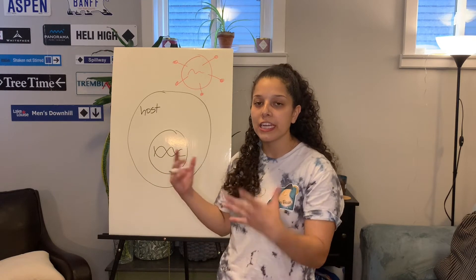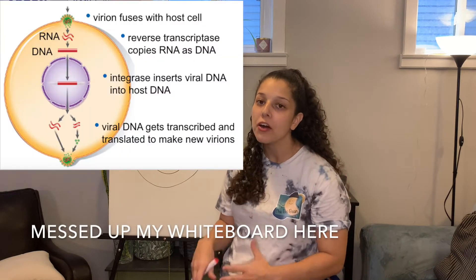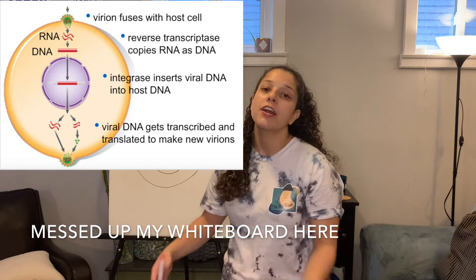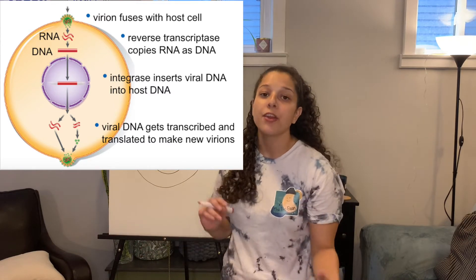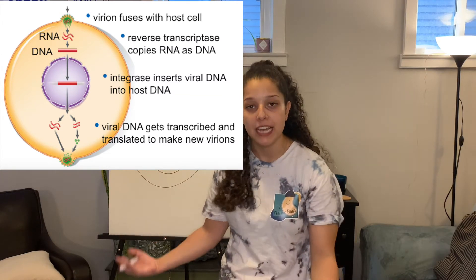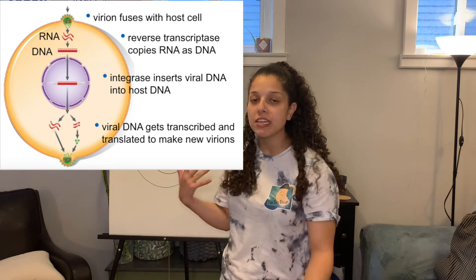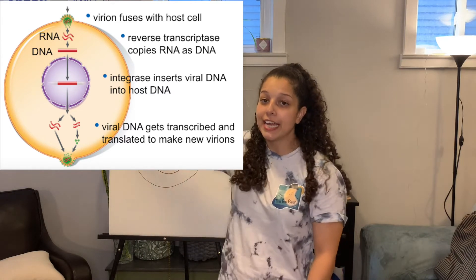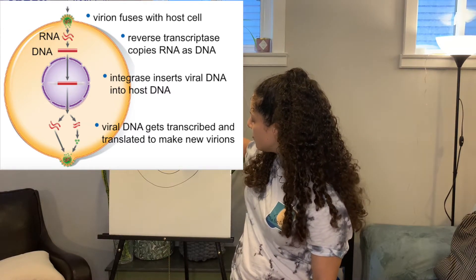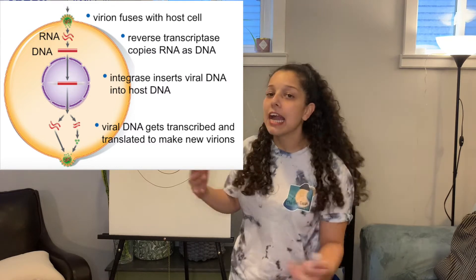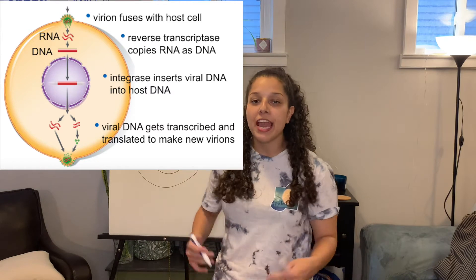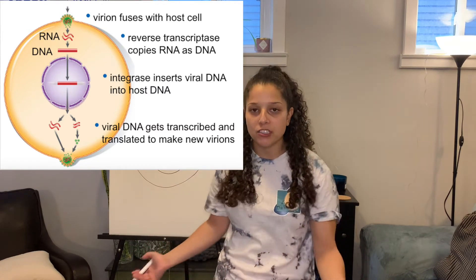When we look back at HIV infecting a host cell, there's an extra step. The HIV virus must first convert its RNA into DNA through the process of reverse transcription, done by the enzyme reverse transcriptase. Then the enzyme integrase integrates the HIV DNA into the host genome. This tells the host cell to create new protein coats, fill them with the HIV genome, and burst the cell.